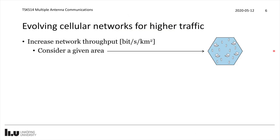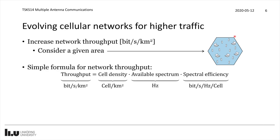How can we create better cellular networks? A simple way to look at that is to consider a particular area — a city, for example — and ask: what is the network throughput in bits per second per square kilometer? That can be captured using a simple formula saying the throughput is divided into three factors: the cell density (number of cells per square kilometer), the available frequency spectrum measured in hertz, and the spectral efficiency in bits per second per hertz per cell.